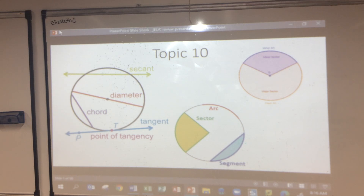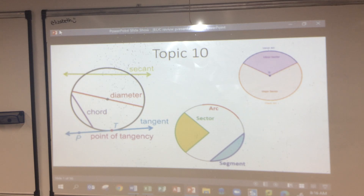A ray has a definite starting point and then continues in some direction forever — that's how we draw it. If this is ray AB, that starts at A. This could be line CD.